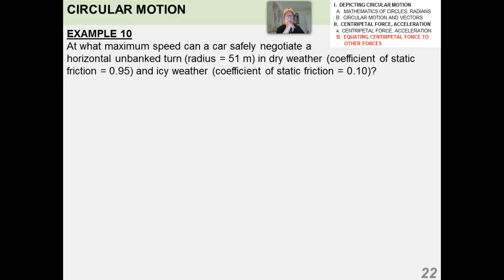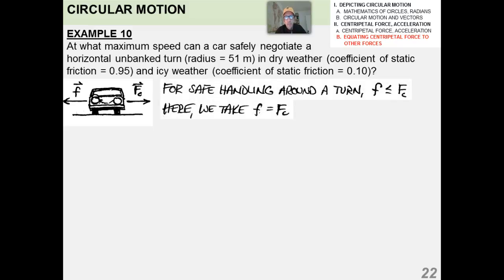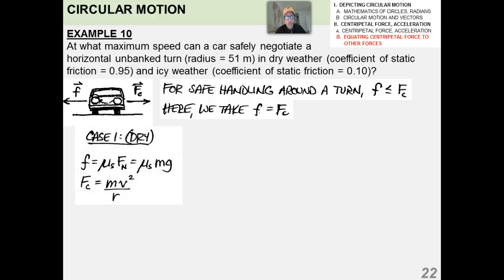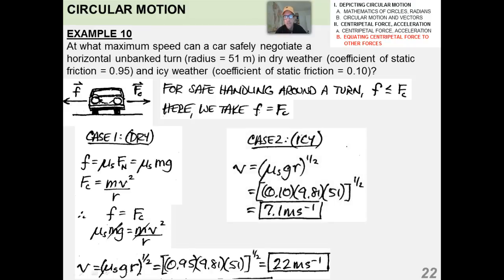Finally, a driving problem: a car going around a turn in icy versus dry weather. For safe handling, friction must be less than or equal to the centripetal force. Setting frictional force — mu_s times normal force — equal to mv²/r, and solving for v, I get 22 meters per second for dry conditions and 7.1 meters per second for icy conditions. This mathematically proves what common sense tells us: you must slow down on icy roads when going around turns.